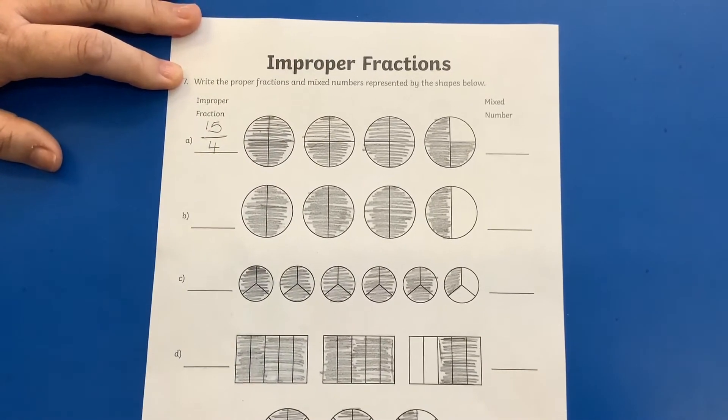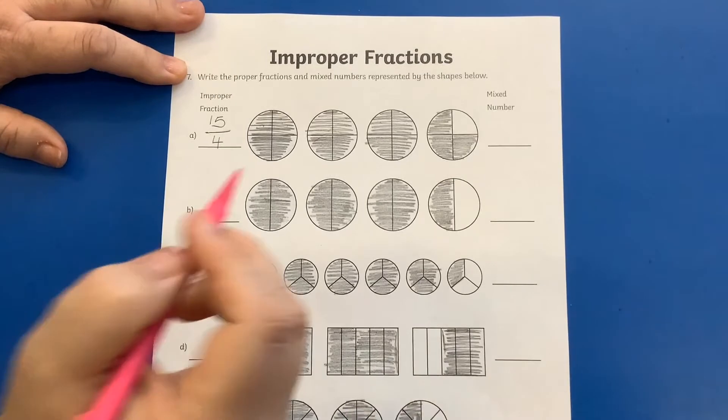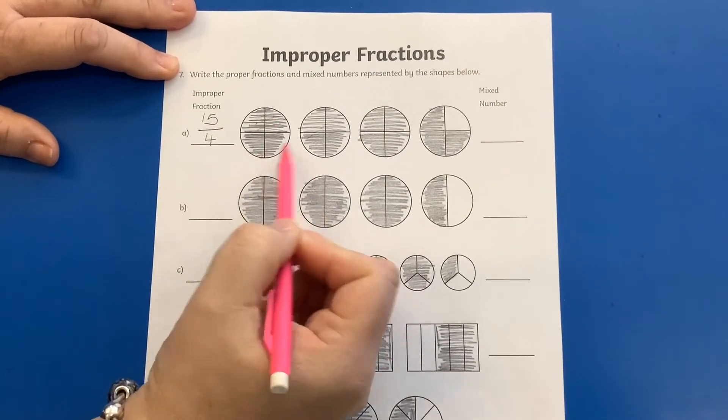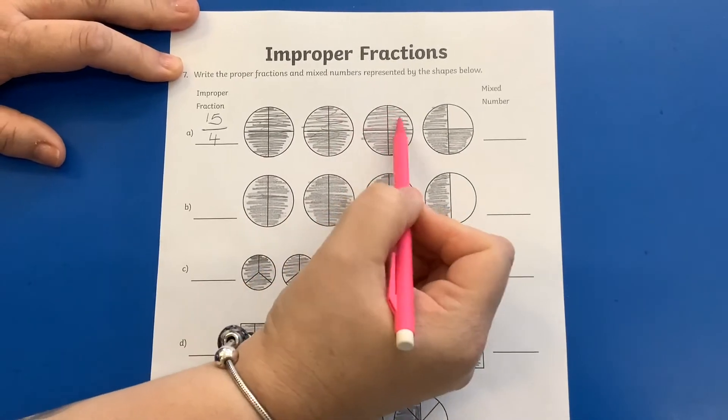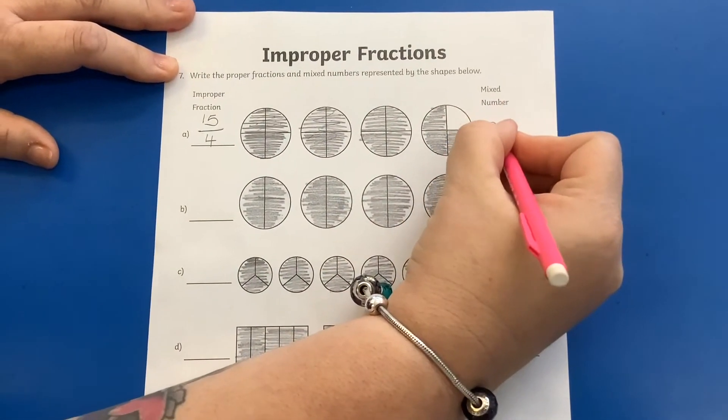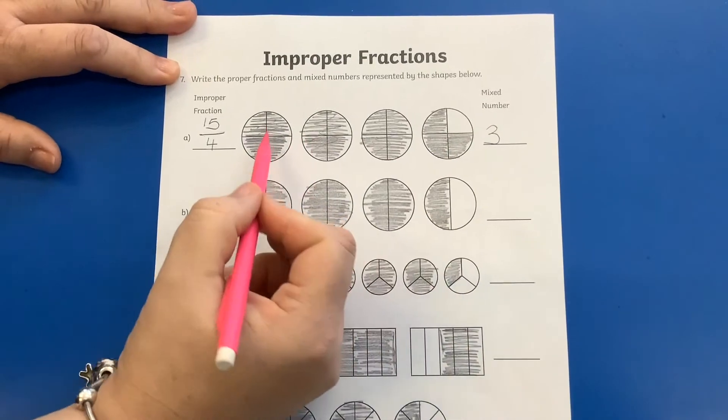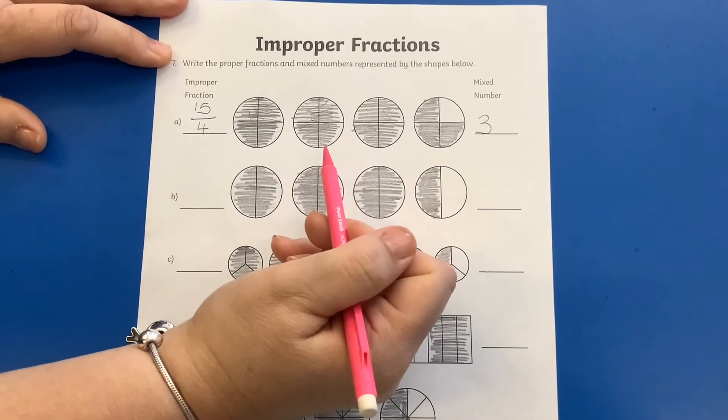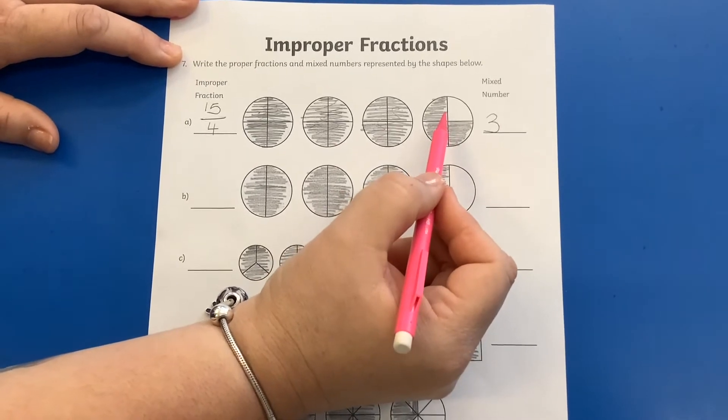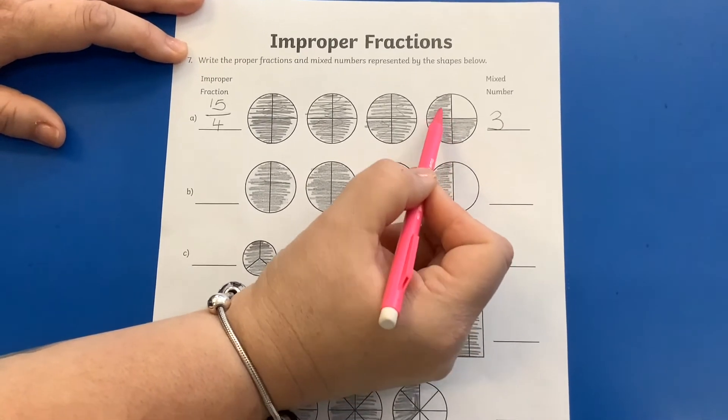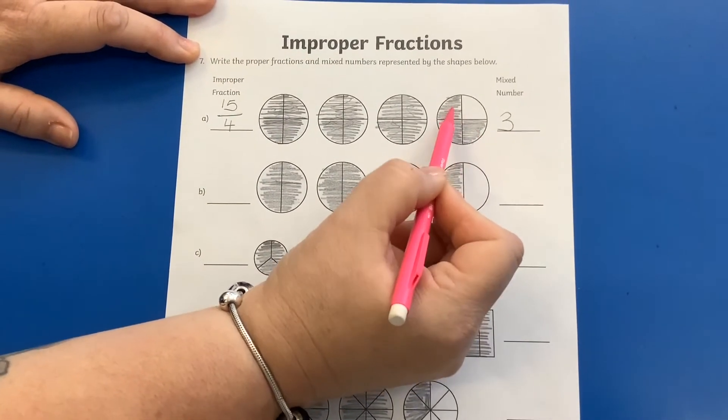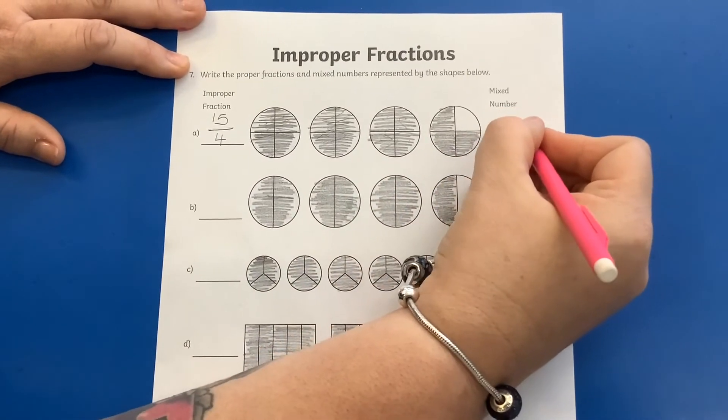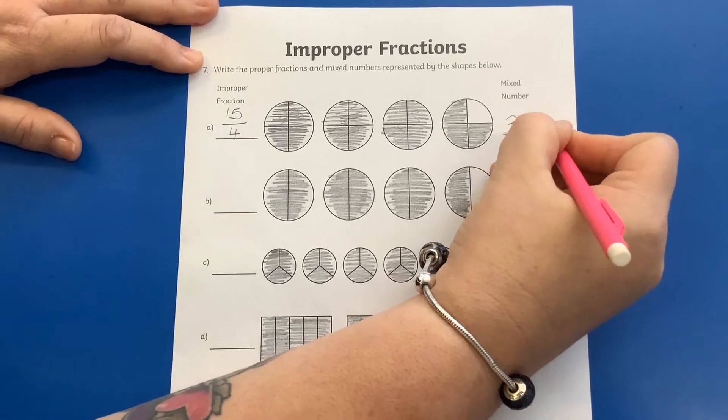So here you can do that easily because you can see it. How many whole groups of four have I got? Well, this is all coloured, this is all coloured, and this is all coloured. So I've got three whole numbers, haven't I? If these were cakes, I've got three whole cakes. And how many here are shaded? One, two, three. So three out of four are shaded. So that would be three quarters.